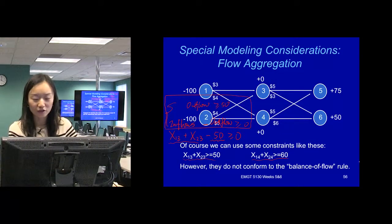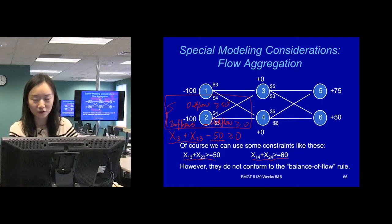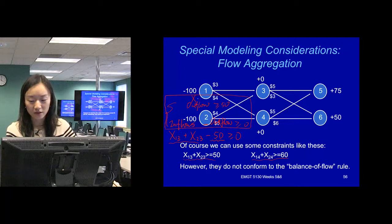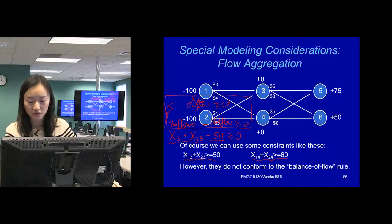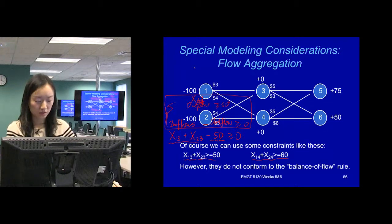We're trying to change this one constraint into a format that's inflow minus outflow. And that outflow can be x-something. Since it's outflow, it should be coming from node 3 — I will say x3i, x3j here. And besides that, we have x3j greater than or equal to 50 because we do want this condition to be met.